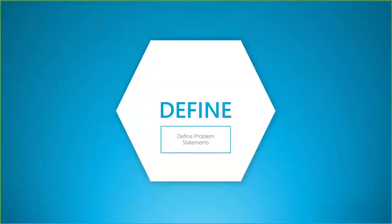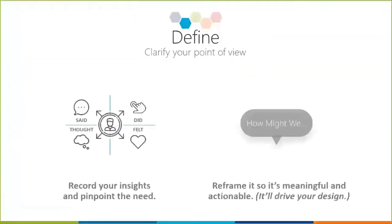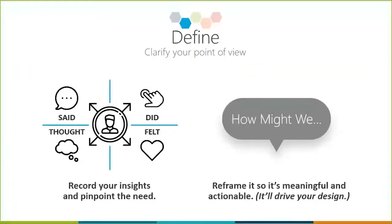Once we've gone out and understood our learners and taken all of that data, we start to synthesize and then define the problem statements. In the define phase, you're clarifying the point of view of both the end user and yourself so that you're very clear on what the problem is. There are a couple of tools: the four-box, where you capture what people said, did, thought, and felt; and then the "how might we" statement, where you turn the problem statement into a "how might we" question, reframing it so it's meaningful, actionable, and helps drive the design.